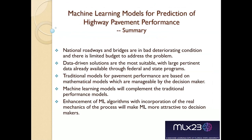In summary: national roadways and bridges are in bad condition, and we have a limited budget to address them, so we need very efficient pavement performance models using ML. Data-driven solutions are the most reliable — basing everything on subjective decisions or traditional models alone is going to be faulty. Traditional models are still good; they're based on mathematical models and manageable by decision makers. For machine learning models, we complement those performance models by incorporating the real mechanics of the process causing the deterioration. Thank you.